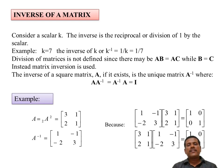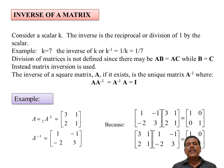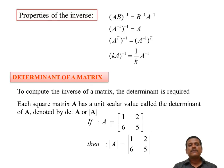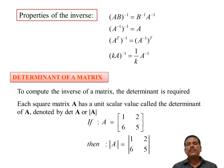Inverse of a matrix: consider a scalar k — the inverse is the reciprocal, one divided by k. For example, if k equals 7, then k inverse equals 1 by 7. Division of matrices is not defined; instead, matrix inversion is used. The inverse of a square matrix A, if it exists, is the unique matrix A inverse where A into A inverse equals A inverse into A equals I. Properties: AB whole inverse equals B inverse into A inverse; A inverse whole inverse equals A; A transpose whole inverse equals A inverse whole transpose; k into A inverse equals 1/k times A inverse.